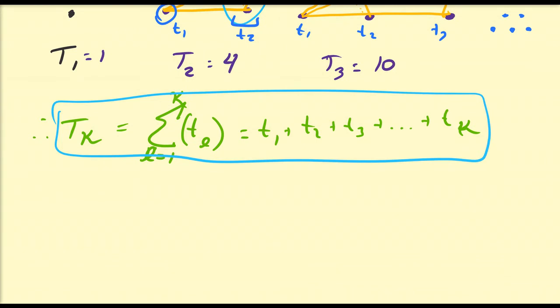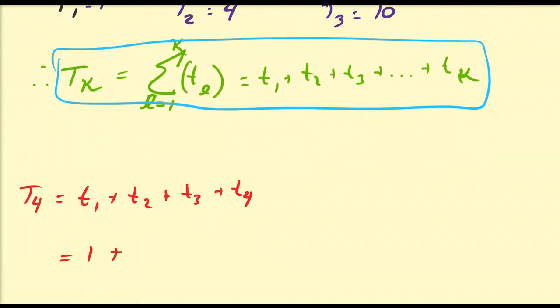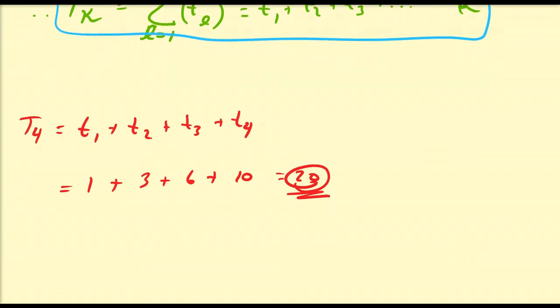The fourth tetrahedral number T4 equals t1 plus t2 plus t3 plus t4. So t1 is 1, t2 is 3, t3 is 6, t4 is 10. We get 10 plus 6 plus 3 plus 1, which is 20. So that's the fourth tetrahedral number.